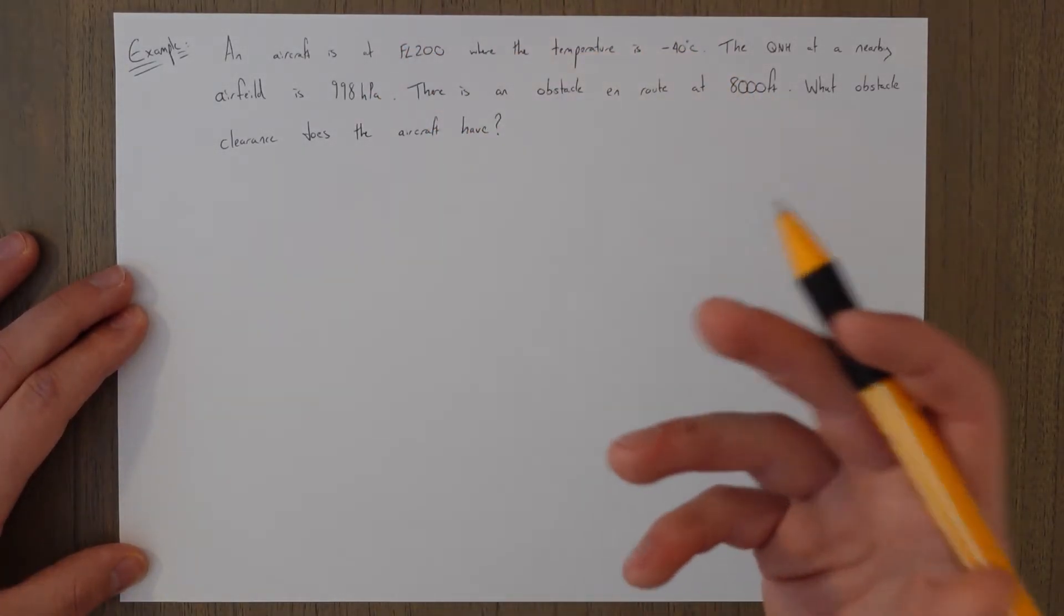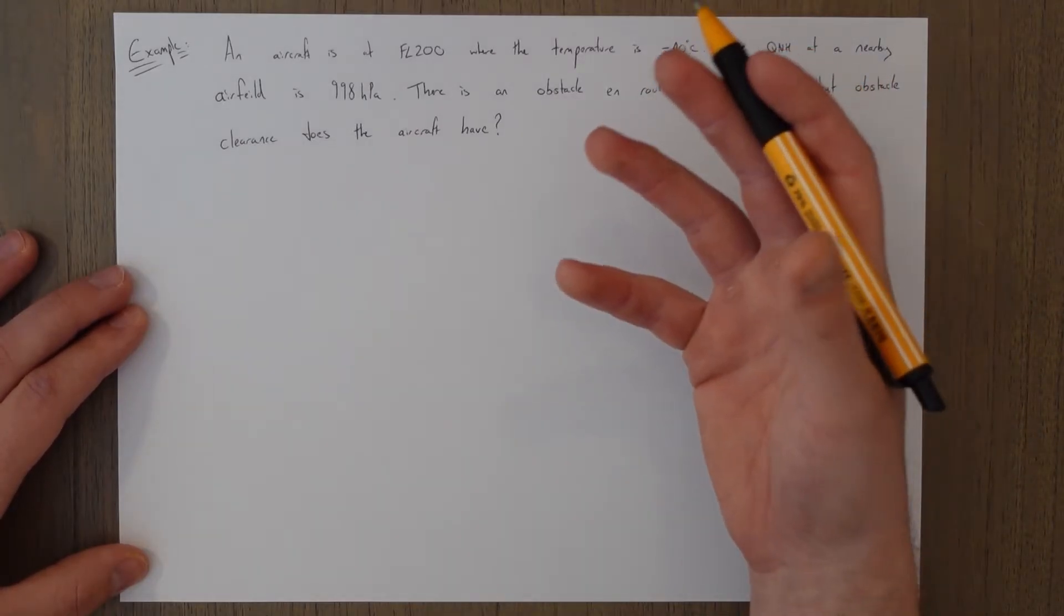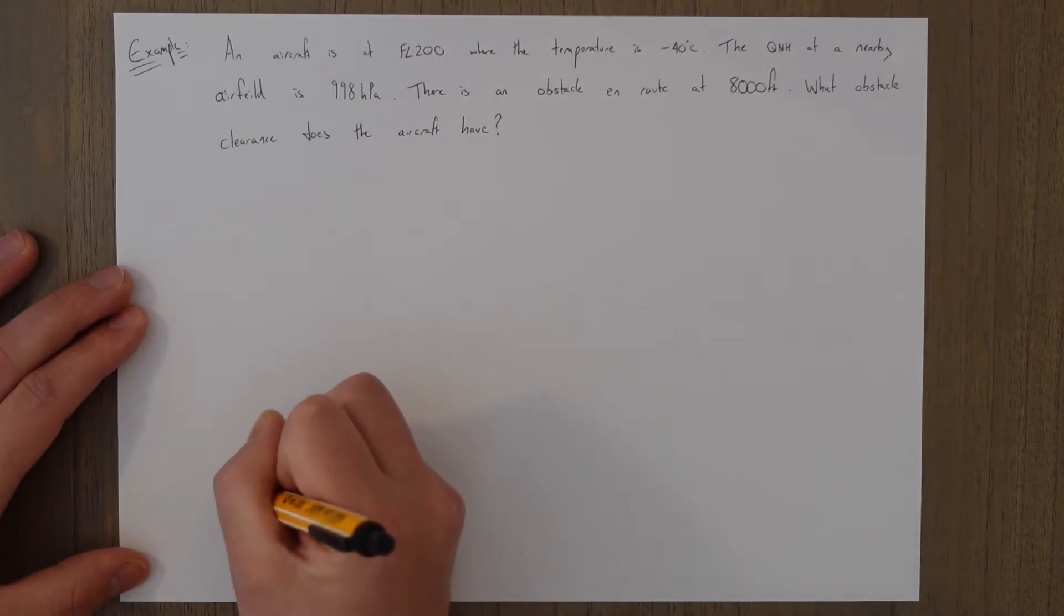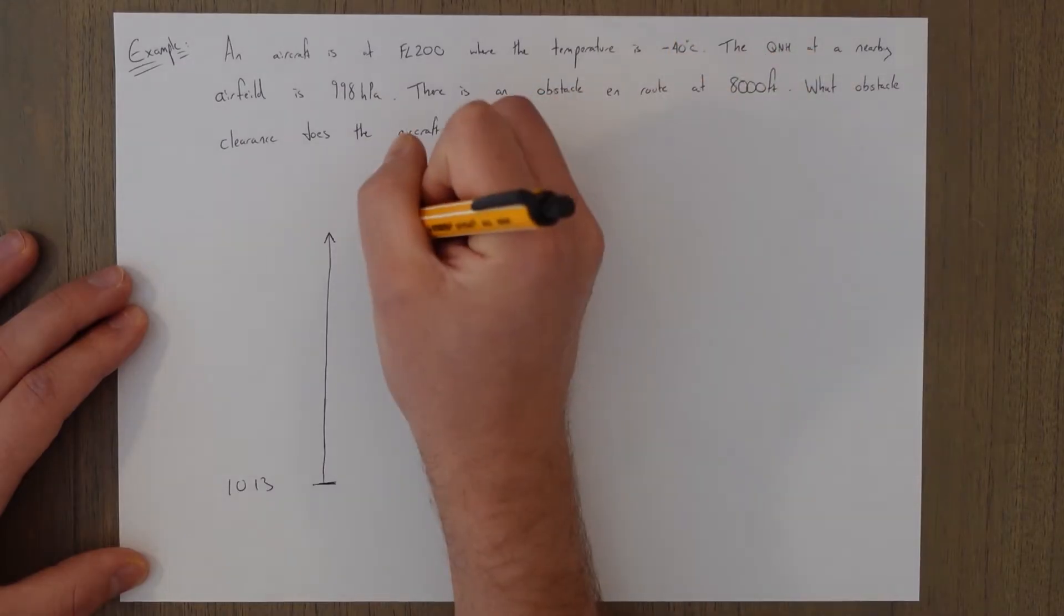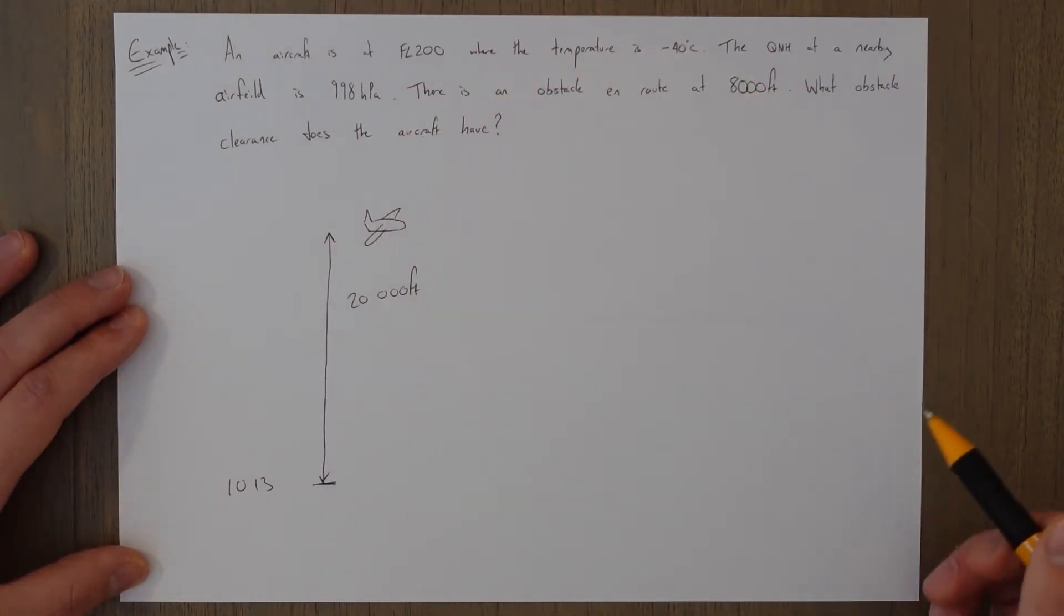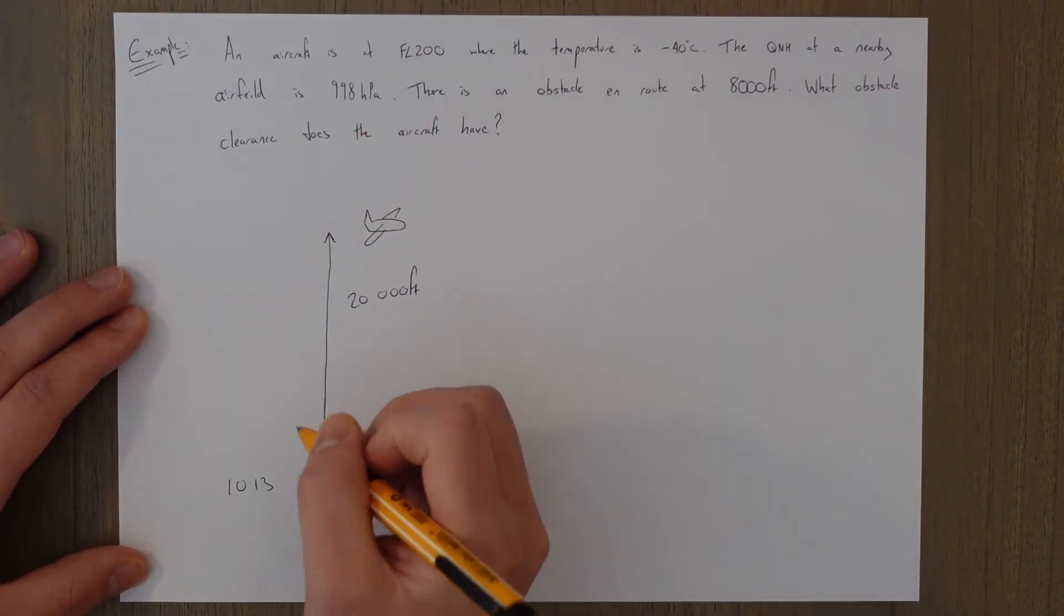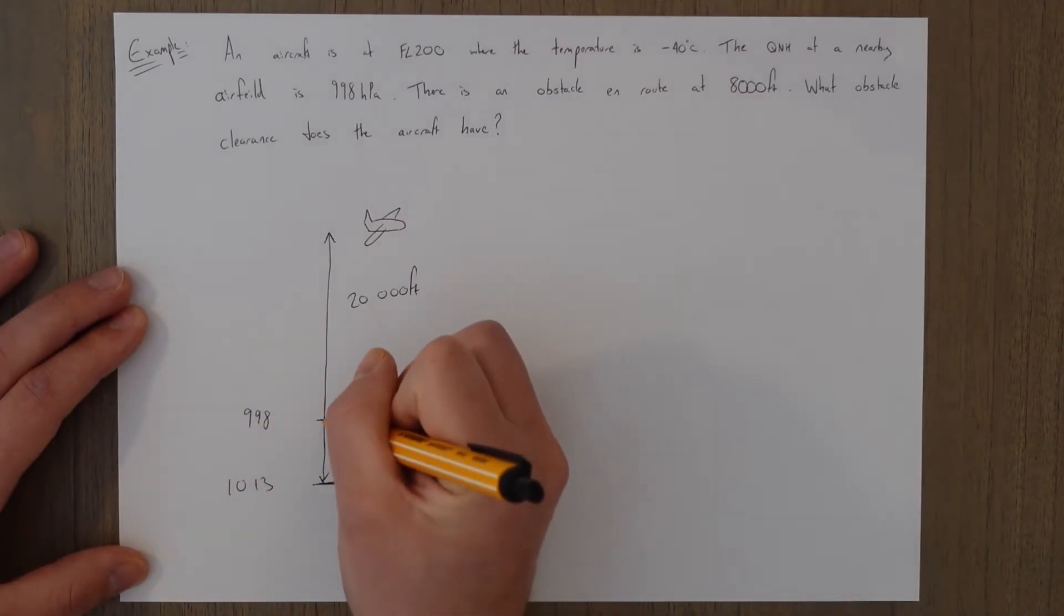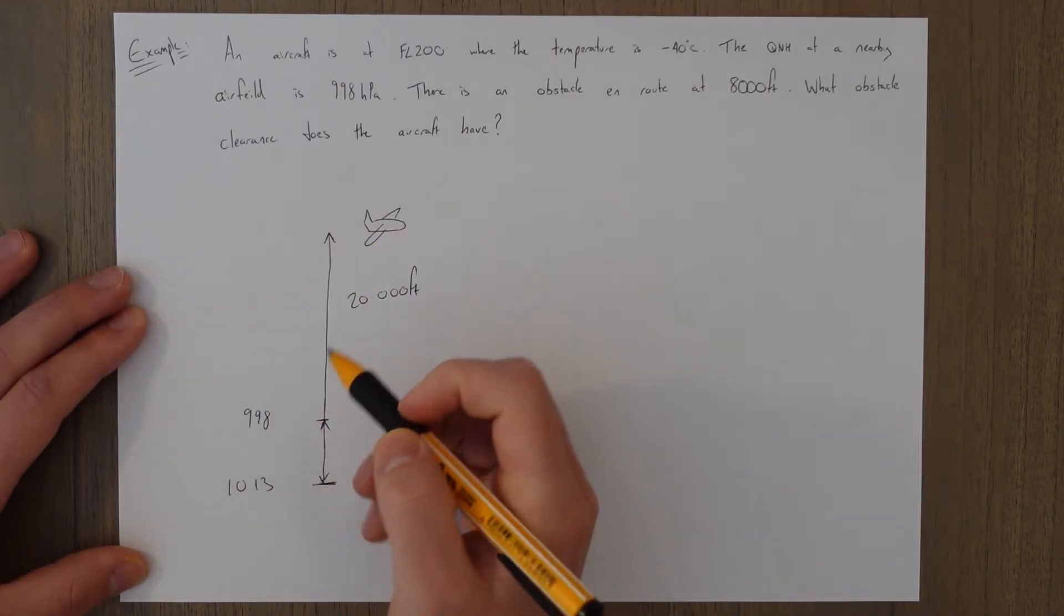Flight level 200 equals 20,000 feet in pressure altitude and that's based off of standard which is 1013. So I'll draw a line here 1013, and 20,000 feet above that is our aircraft. We then have the QNH which is going to be a lower pressure of 998, and that's going to be higher up, so it's going to be somewhere up here.